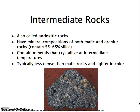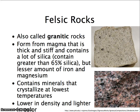Then you get into intermediate rocks, also known as andesitic rocks. They have a mineral composition of about 50% mafic and 50% granitic, with about 55% silica. They crystallize at an intermediate temperature, and because they have a little more silica and less iron and magnesium, they are lighter in density and lighter in color. The last type is granitic rocks, which form from magma with greater than 65% silica and much less iron and magnesium. They crystallize at the lowest temperature, so they take the longest to solidify — giving crystals the ability to form large structures. They are lower in density and lighter in color.